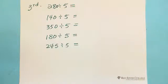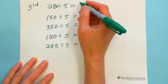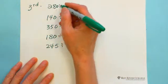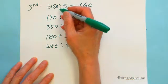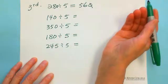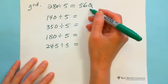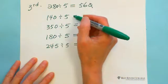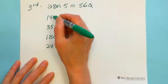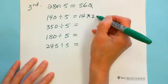The trick for dividing by 5 is: divide by 10 first, then double it. So 140 divided by 5 — first divide by 10 to get 14, then multiply by 2 to get 28. And 350 divided by 5 — divide by 10 to get 35, then double to get 70.